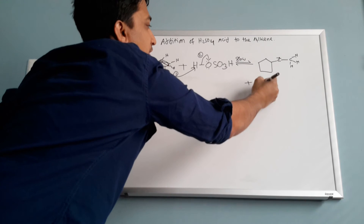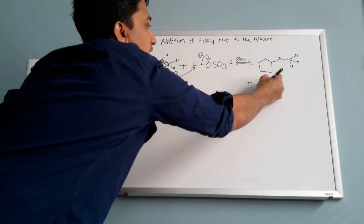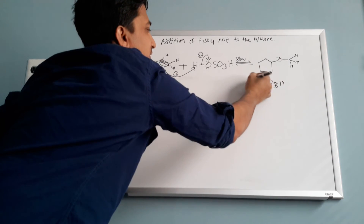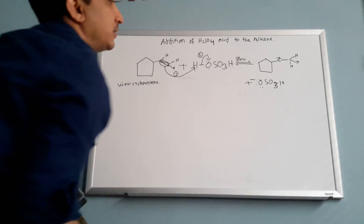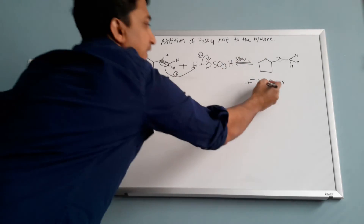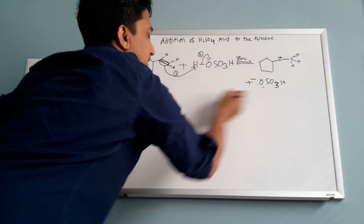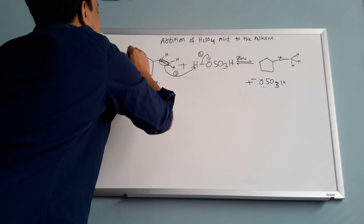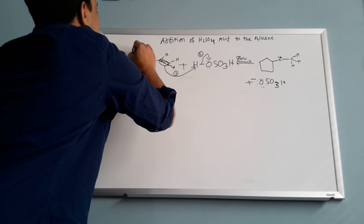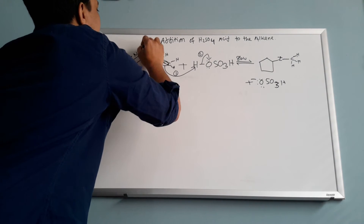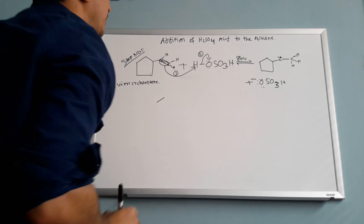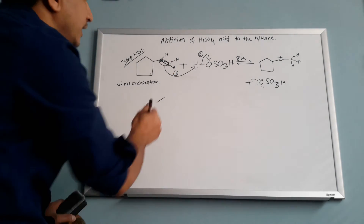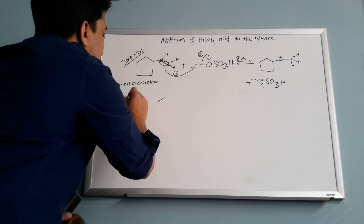So when this carbon gets the carbocation and oxygen accepts the electrons, it becomes negatively charged — giving us OSO3H minus. Copy this exactly as it is. This is step number one, and step number one is protonation — you grab the hydrogen. And this is step number two.